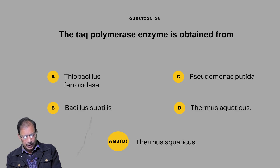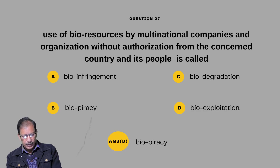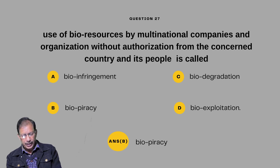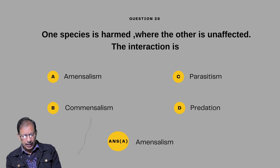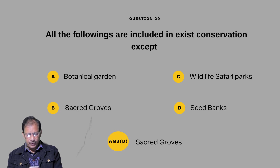Question number twenty-seven: Use of bio-resources by multinational companies without authorization from the concerned country and its people is called — bio-infringement, biopiracy, biodegradation, or bio-exploitation. It is called biopiracy. Question number twenty-eight: One species is harmed while the other is unaffected — the interaction is called amensalism.